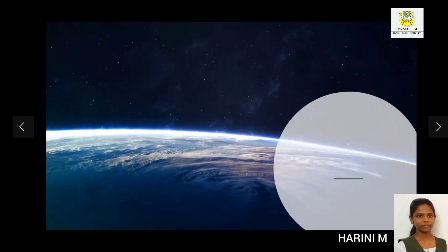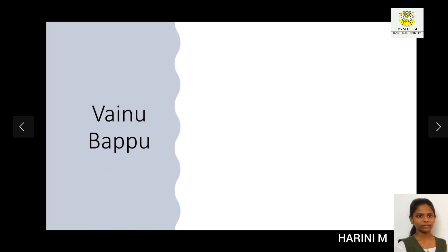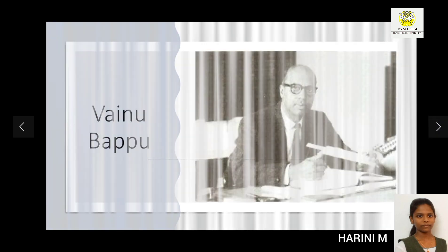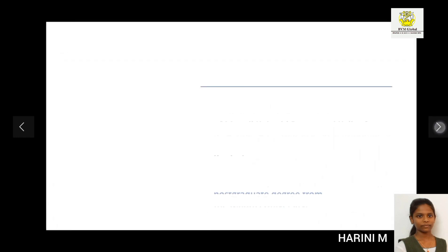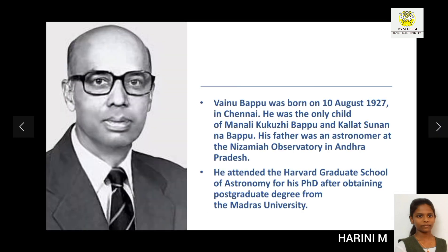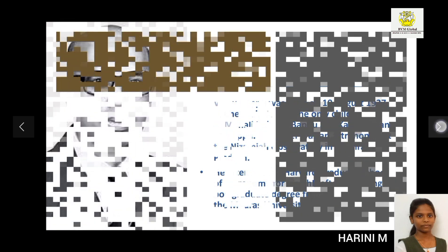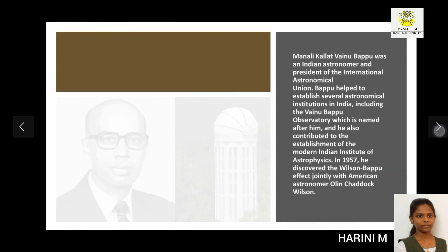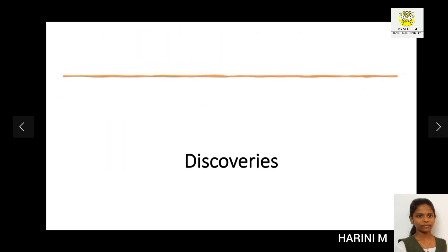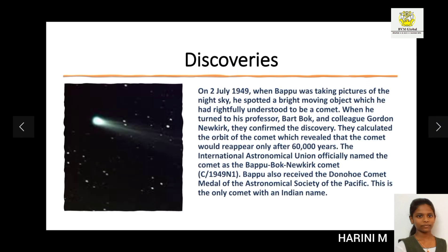Good morning. My name is Sarini. Our topic is the Father of Astronomy. I have done a presentation about Vainu Bappu, who is known as the Father of Modern Indian Astronomy. Vainu Bappu was born on 10 August 1927 in Chennai. He attended the Harvard Graduate School of Astronomy for his PhD after obtaining a postgraduate degree from Madras University. Vainu Bappu was an Indian astronomer and president of the International Astronomical Union, and helped establish several astronomical institutions in India. While taking pictures of the night sky, he spotted a bright moving object — a comet — which would reappear only after 60,000 years.